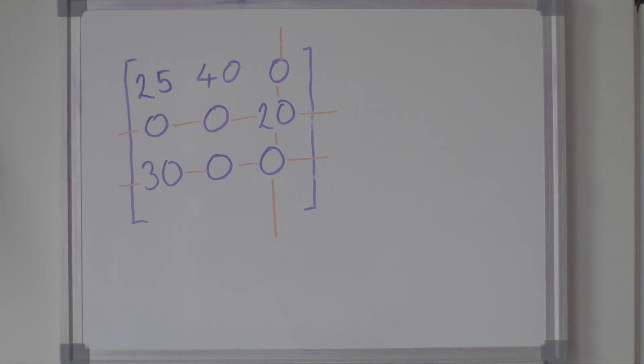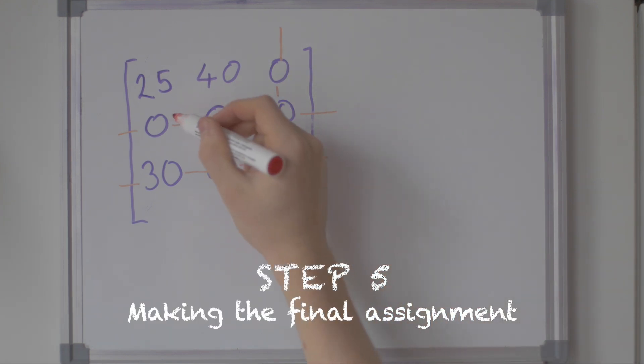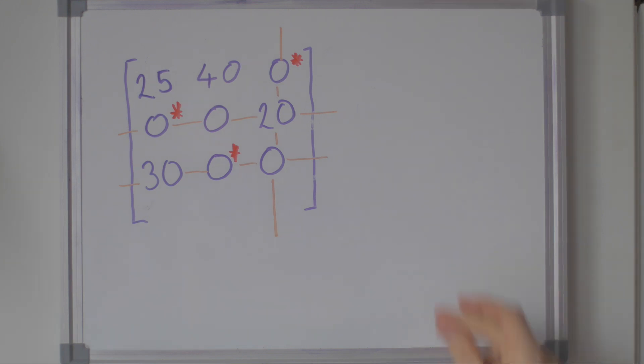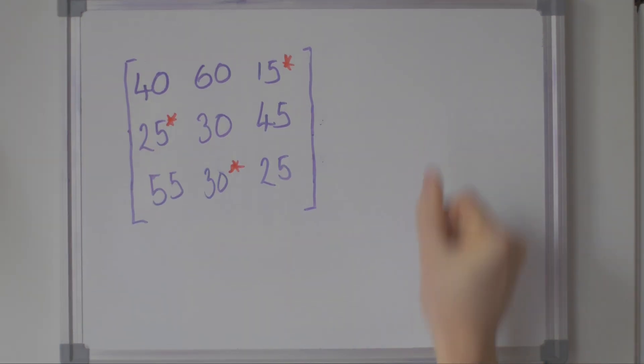Step five: making the final assignment. We choose n zeros, where n is the number of rows and columns, whilst ensuring that each row and column of the matrix only contains one chosen zero. In our example, the chosen zeros are starred. These chosen zeros represent our final assignment of workers to jobs. To obtain the total minimum cost, we sum the values of the original matrix that are in the same positions as our chosen zeros.